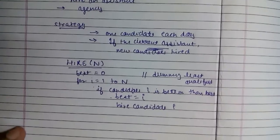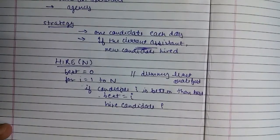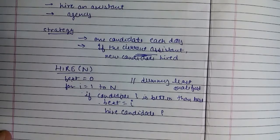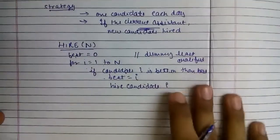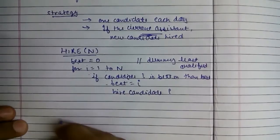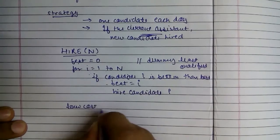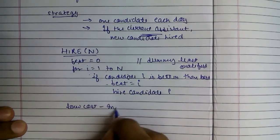In this analysis we are not bothered about the time it's going to take. We are bothered about the cost. Previously when we did dynamic programming we were focused on timing, and we improved our timing because recursion was taking too long. But here we are focused on cost. So let's define some terms: what is the low cost?